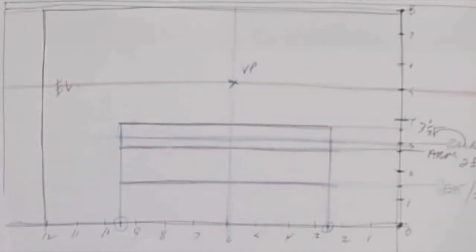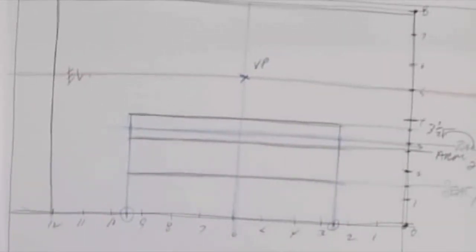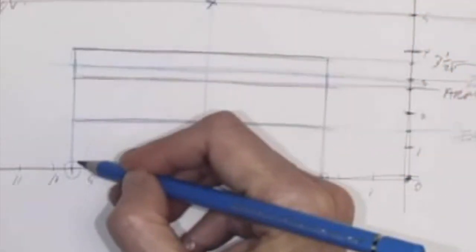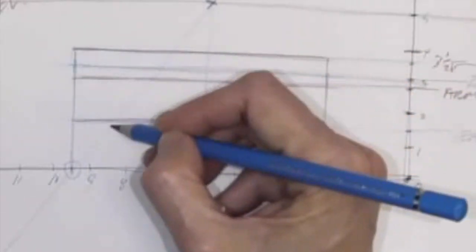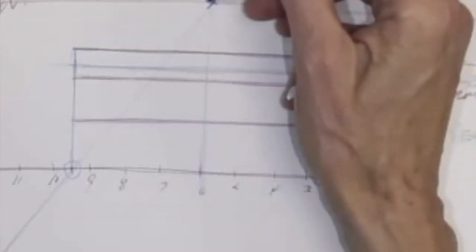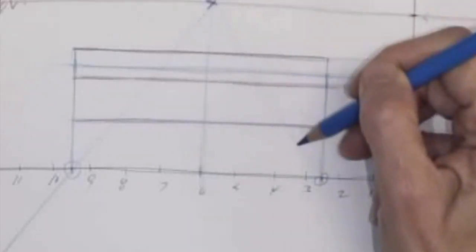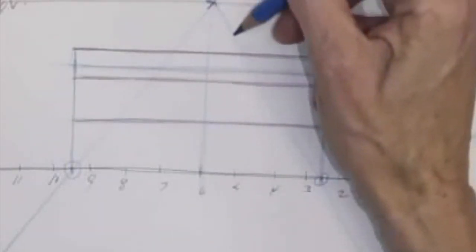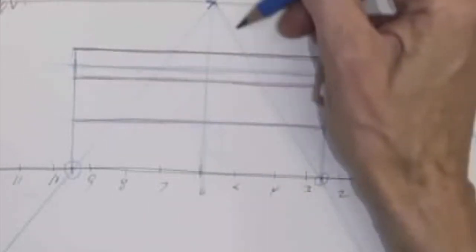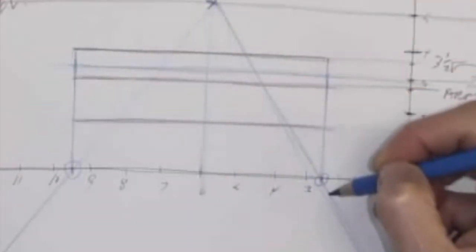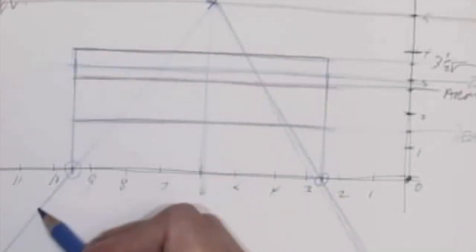Now, we have to bring everybody forward onto the floor. We use our vanishing point and our whole arm and bring that along. And do the same thing on the other side.